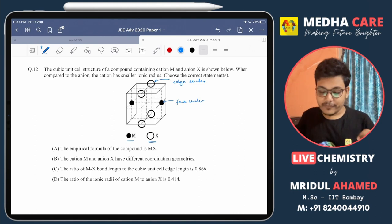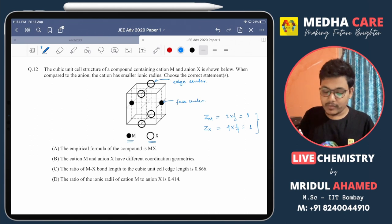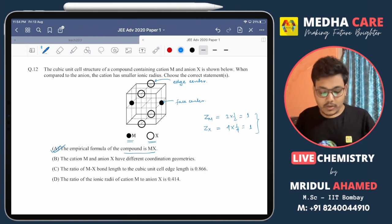If you consider the effective number of atoms, the atom number M effective atom number will be 2 into half, that is 1 in this unit cell. The effective atom number of X, there are 4 atoms present at the edge center, so one-fourth will be inside the cube, that will also be 1. So you can clearly see that the ratio of M and X in this unit cell is 1:1. So the empirical formula of the compound will be MX. So option A is correct.